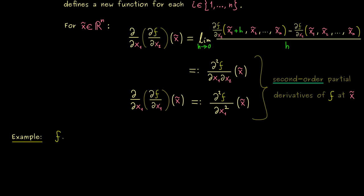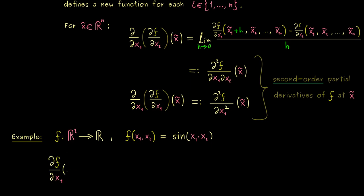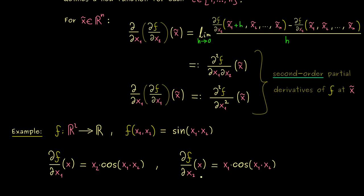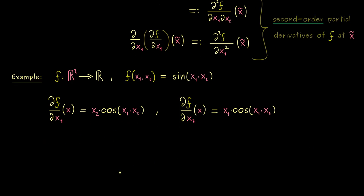Let's look at an example. Take a function from R² into R given by f(x₁, x₂) = sin(x₁ · x₂), and let's first calculate the first-order partial derivatives. The partial derivative with respect to x₁ gives the inner derivative x₂ times cosine of x₁x₂, by the simple one-dimensional chain rule. By symmetry, the partial derivative with respect to x₂ gives x₁ times cosine of x₁x₂. With these new functions, we can now form partial derivatives again, giving us four second-order partial derivatives. Starting with ∂²f/∂x₁², we differentiate ∂f/∂x₁ with respect to x₁ again, getting x₂ squared as the inner derivative and minus sine, so the result is −x₂² · sin(x₁x₂).